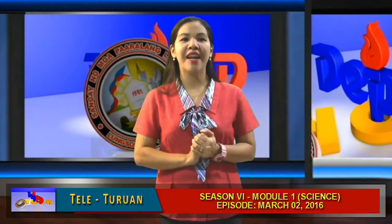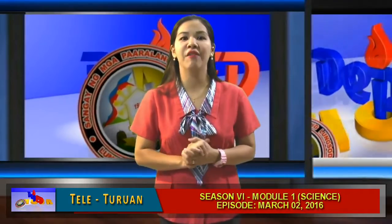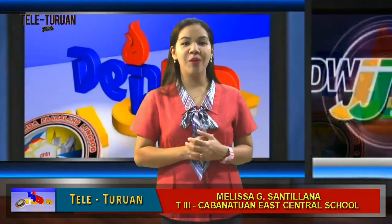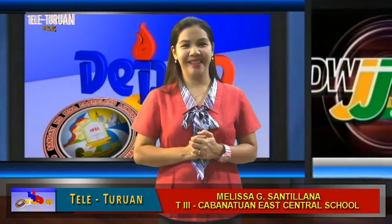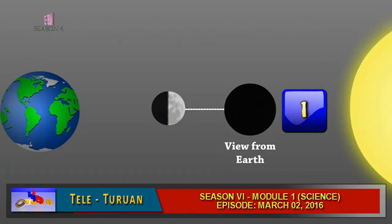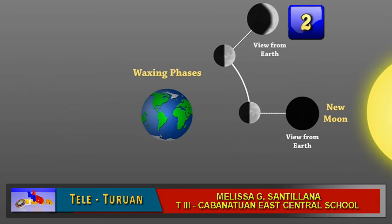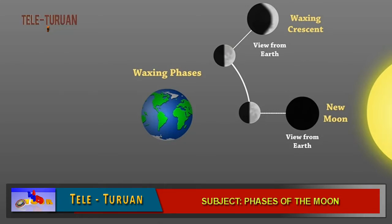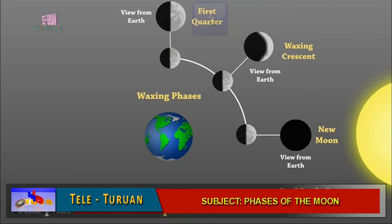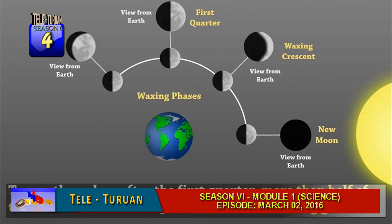Now let's see if you can identify the different phases of the moon beginning with the new moon. Let's identify number one. Correct, that's new moon. How about number two? Yes, that's waxing crescent. And three, the first quarter. Four, the waxing gibbous.